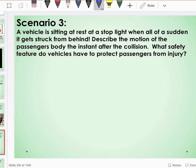Another example, a vehicle is sitting at rest at a stoplight when all of a sudden it gets struck from behind. Describe the motion of the passenger's body the instant after the collision. What safety features do vehicles have to protect this? So in this scenario, the vehicle is not moving. If the vehicle were to be hit from the behind, the vehicle will be pushed forward. But again, the passenger is a separate entity. So the passenger will stay at rest and the vehicle will be jolted forward.